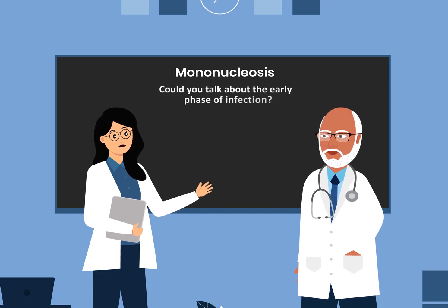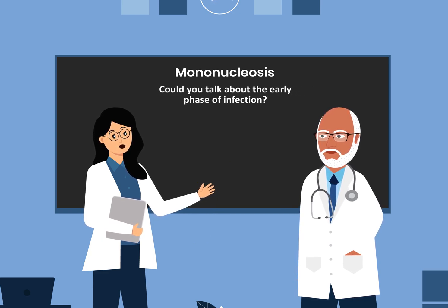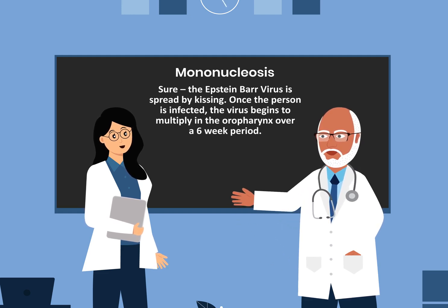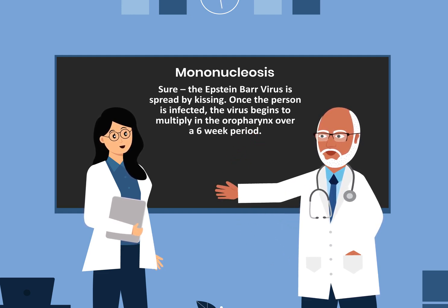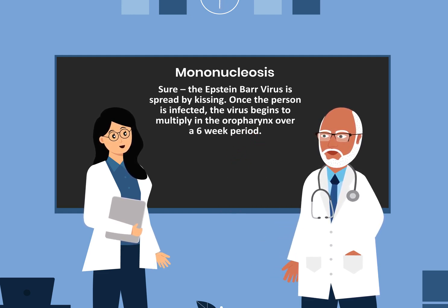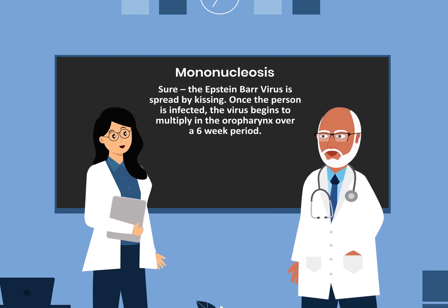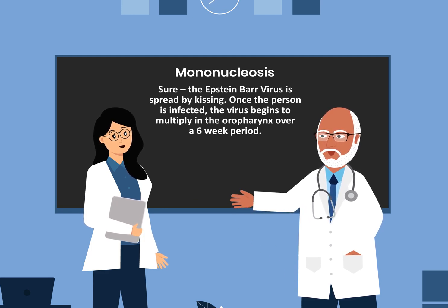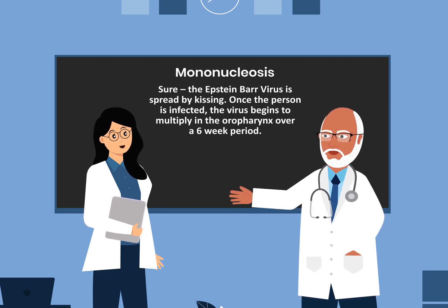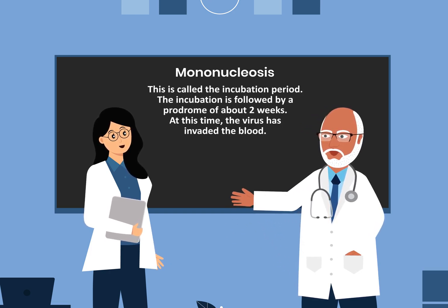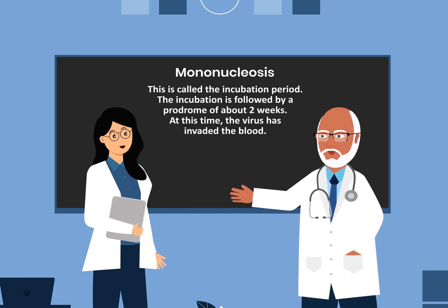The Epstein-Barr virus is spread by kissing. Once the person is infected, the virus begins to multiply in the oropharynx over a 6-week period. This is called the incubation period.